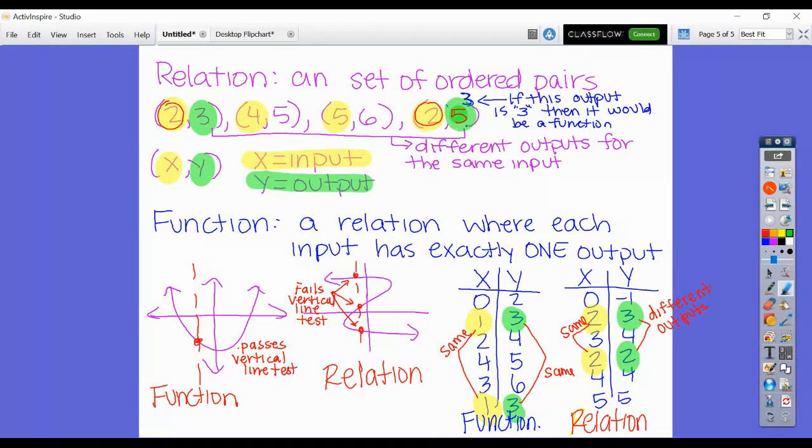If we're looking at a table, you can see on the first table it's going to be a function because I'm looking at the x values: 0, 1, 2, 4, 3, 1. I see that 1 repeats—I have the same input, so I have to look at the output. The first input for 1 gives me a 3, the second time it also gives me a 3. Since the outputs are the same, it is a function.